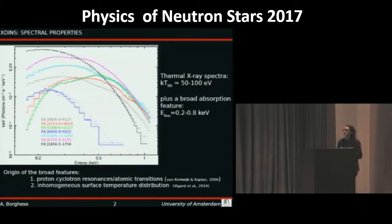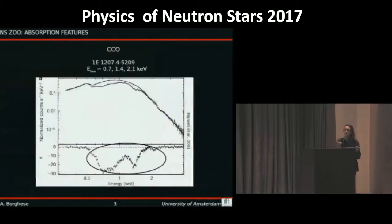But X-DINs are not the only isolated neutron star to show this feature in their X-ray spectra. We have a few examples of these other sources like the CCOs 1E1207, which was the first one to show such strong absorption feature in the spectra.